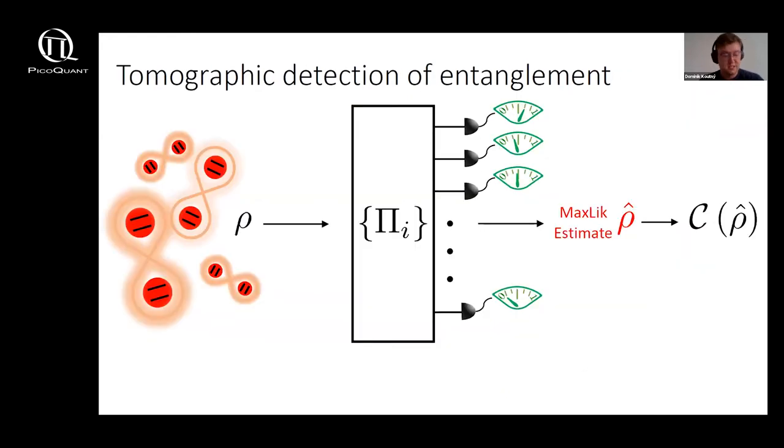Since it turns out that tomography is necessary we will use it as a baseline to compare our results with. Tomography just very quickly works as follows: you basically try to collect as many measurements as possible and feed those collected data into the maximum likelihood procedure which will give you the most likely description of your source.